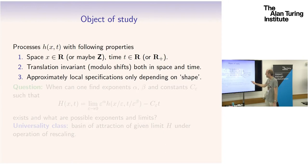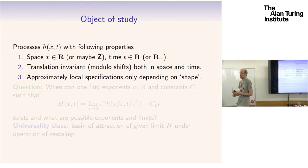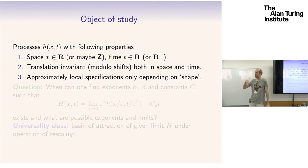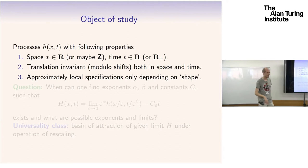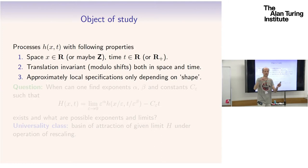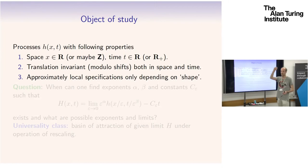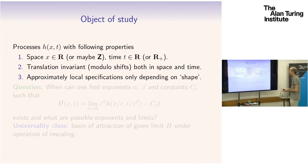We're interested in processes that have some sort of approximately local specification. What that means is that basically, if you want to simulate the process and figure out what happens somewhere in space, you don't have to know what happens really far away. So it's more or less local in space and time. The way the process is specified locally doesn't really depend on what happens very far away. It doesn't have to be exactly local, but it somehow just doesn't have long-range dependencies.